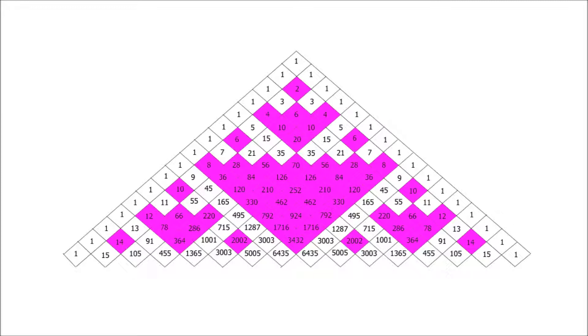For example, 1 plus 15 is 16. Odd plus odd is always even. So, apart from the two 1s at the end of the row, we'll expect that the rest of the row will be even. So, we'll be colouring in all of that row apart from the 1s at the end.